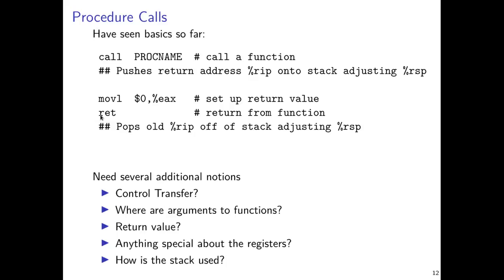For example, if main calls function A and function A returns, control returns to main. However, if function B calls function A, when function A returns it should go back to function B instead. To that end, the return and call instructions need to do a little extra work — to say, I'm calling from a certain position and that's the position I'll return to later on.